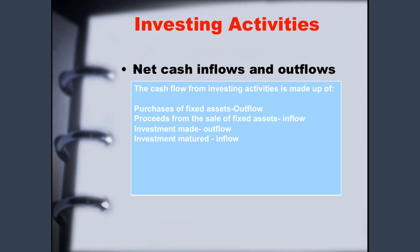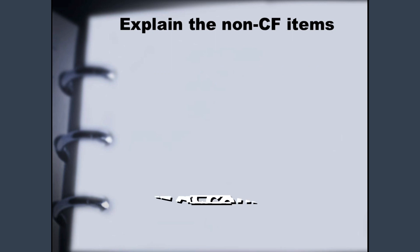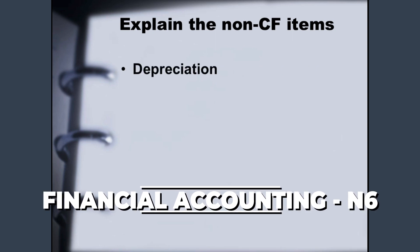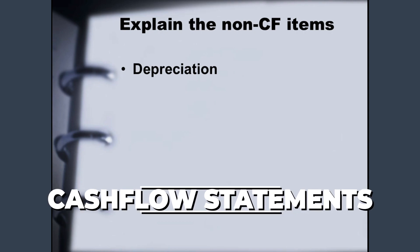Now let's break down the non-cash flow items. Depreciation — why is depreciation important? We use assets, for example we purchase a vehicle to deliver stock to customers. By using the vehicle every day, the vehicle loses value, so you need to calculate depreciation. When you sell this vehicle, you will sell it at the net carrying value, which comes from: original cost minus accumulated depreciation equals net carrying value of the asset.